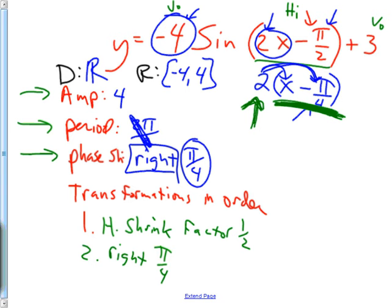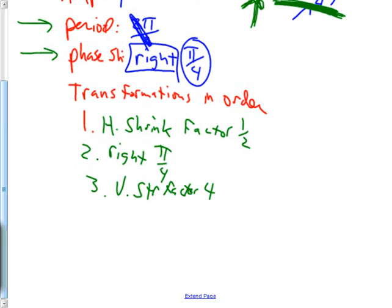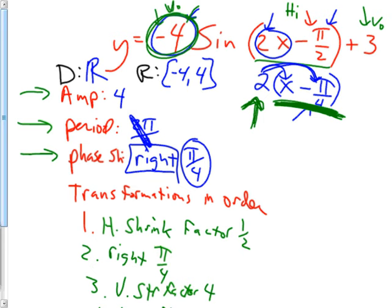Number two: now that I've done the 2, I can do the thing in the parentheses, which is the phase shift — right π/4. Number three: I go to the outside, and I have three things left — the negative, the 4, and the 3. You do these in normal order; multiply first. I like to stretch before you flip — it works in gymnastics and also in math. So stretching first: that's a vertical stretch with a factor of 4. Then the flip — vertical reflect. Last is the +3, and that's simply up 3.